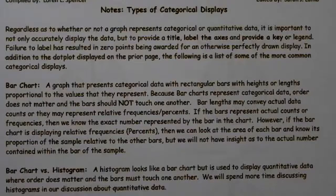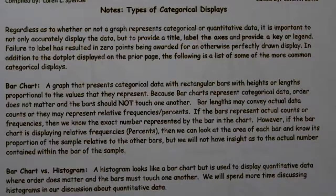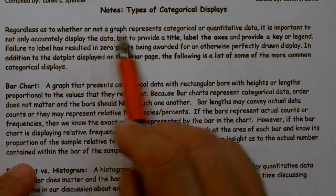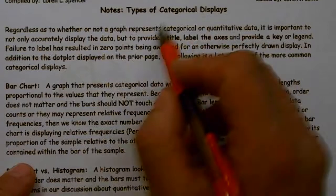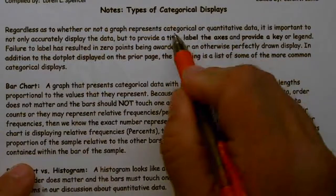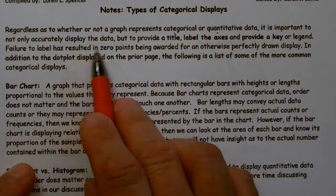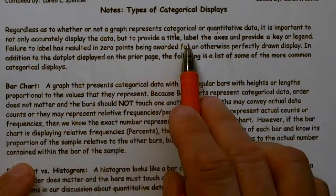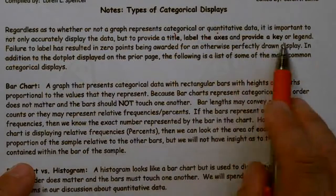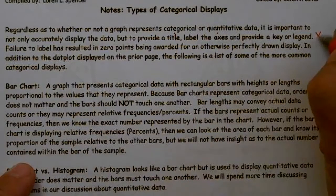I'm going to spend a little bit of time talking about, in generality, types of categorical displays. I'm also going to give you a few admonishments on how to get all your points on the AP exam, beginning with that. So regardless of whether a display is categorical or quantitative, it's important not only to label the display, but to provide a title, label the axes, and provide a key or legend.